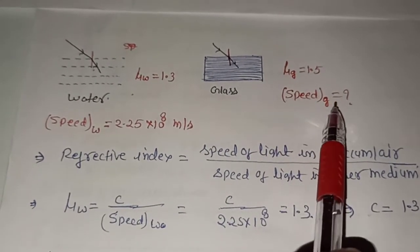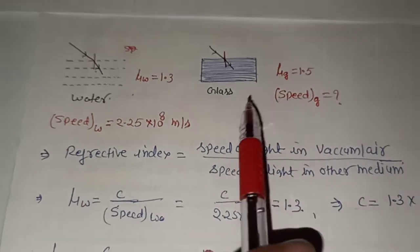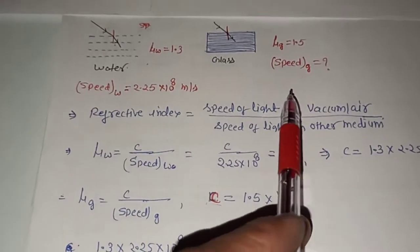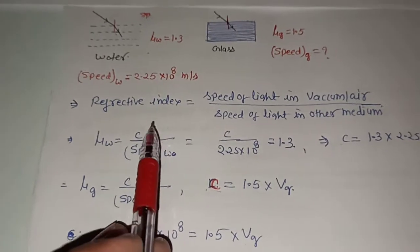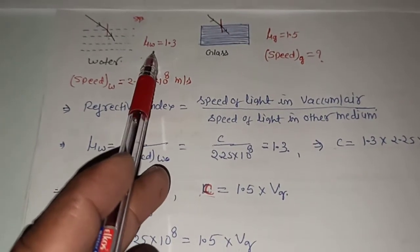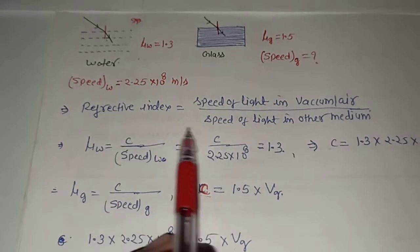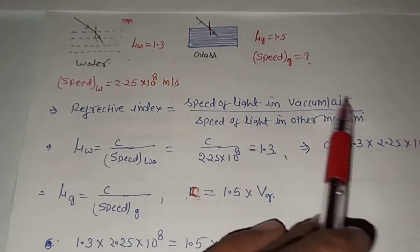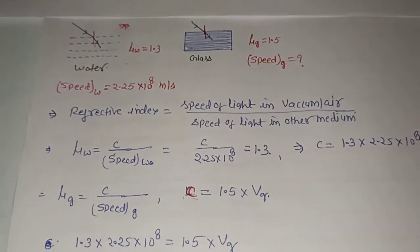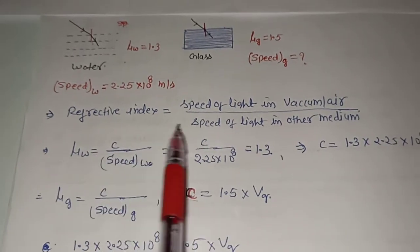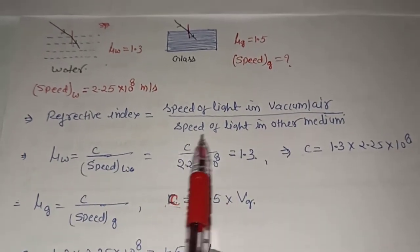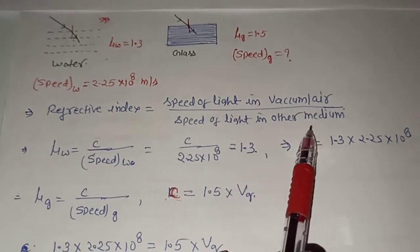We need to find the refracted speed of light in glass. We will use the refractive index formula since refractive index data and speed data are both available — this is convenient. The formula is: refractive index equals speed of light in vacuum divided by speed of light in the other medium.